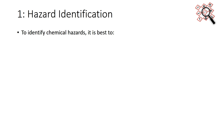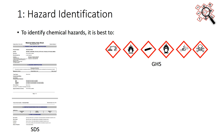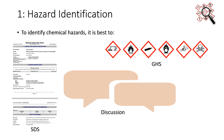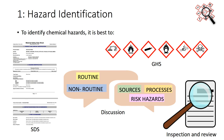To identify chemical hazards, it is best to refer to the SDS of the chemicals being used, and identify the GHS hazard — physical, health, or environmental hazards. Discuss with the involved laboratory staff to identify routine and non-routine laboratory work, determine the sources and processes that are possible risk hazards, and inspect the laboratory facility.